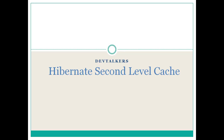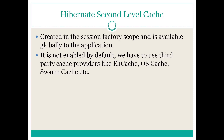Hello friends, welcome. In this video tutorial we are going to implement Hibernate second-level cache using Spring Boot, JPA, and EH Cache. Hibernate second-level cache is created in the session factory scope and is available to the whole application. It is not enabled by default — we have to use third-party cache providers like EH Cache, OS Cache, and Swarm Cache.